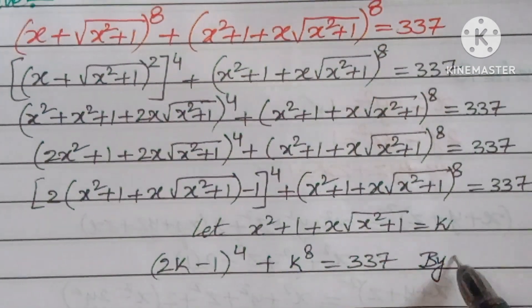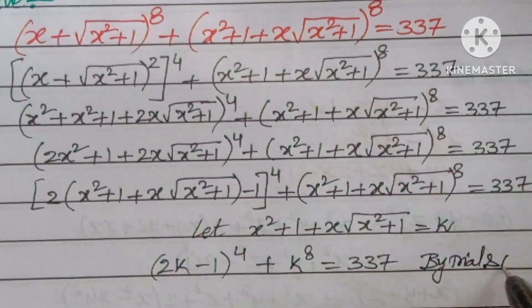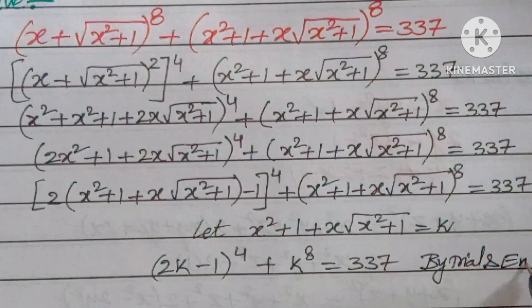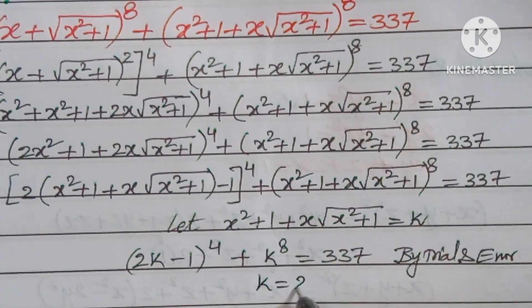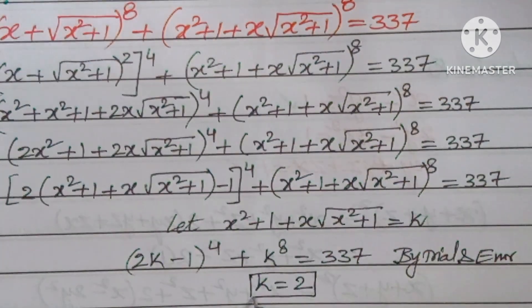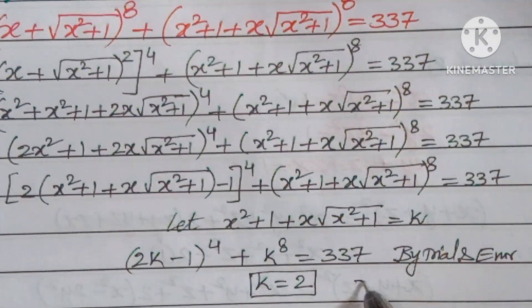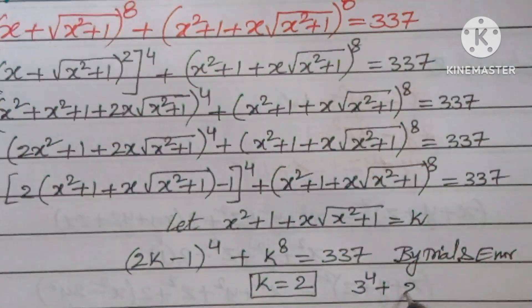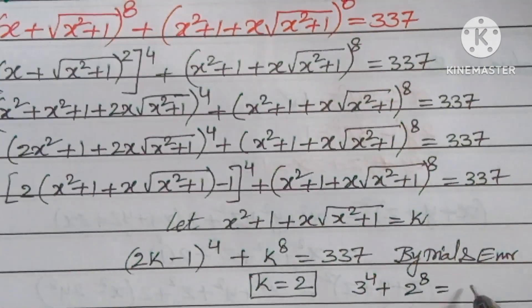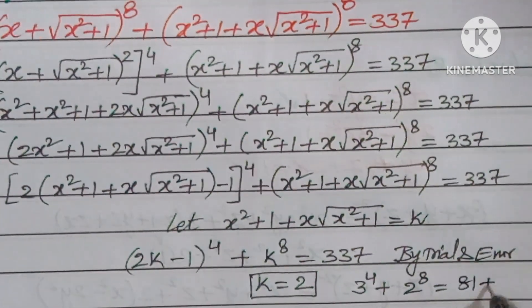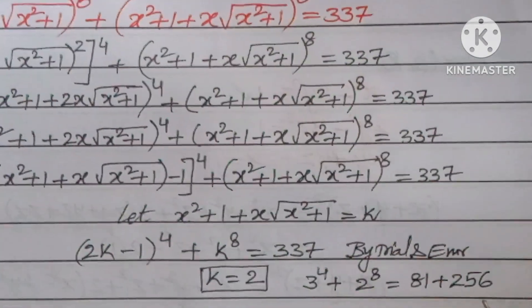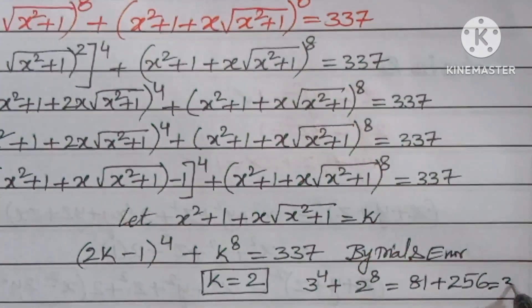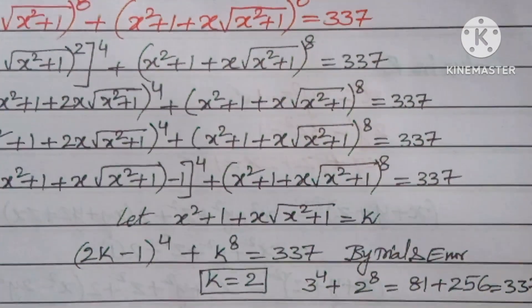By trial and error, we can find k = 2. Substituting: (2×2 − 1)⁴ + 2⁸ = 3⁴ + 2⁸ = 81 + 256 = 337. ✓